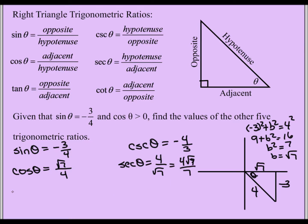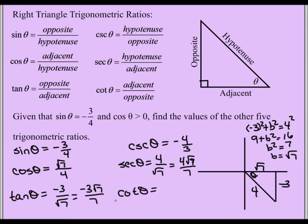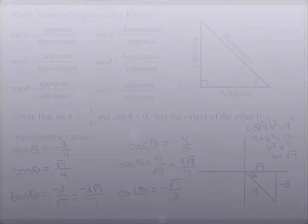Tan theta is opposite over adjacent: -3 over √7. Rationalizing gives -3√7/7. Cotangent theta is the reciprocal of tan theta. Looking at it prior to rationalizing, that's -√7/3. And this is how we find our six trigonometric ratios.